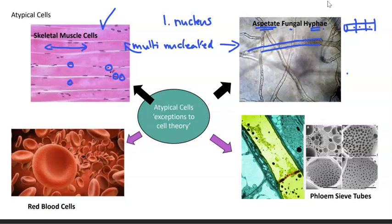So the number of nuclei is the first challenge. The second challenge is the idea that cytoplasm is restricted to one cell — we previously saw in plasmodesmata that this doesn't happen in plants either. Then we have the curious example of red blood cells, which many students will know do not have a nucleus.